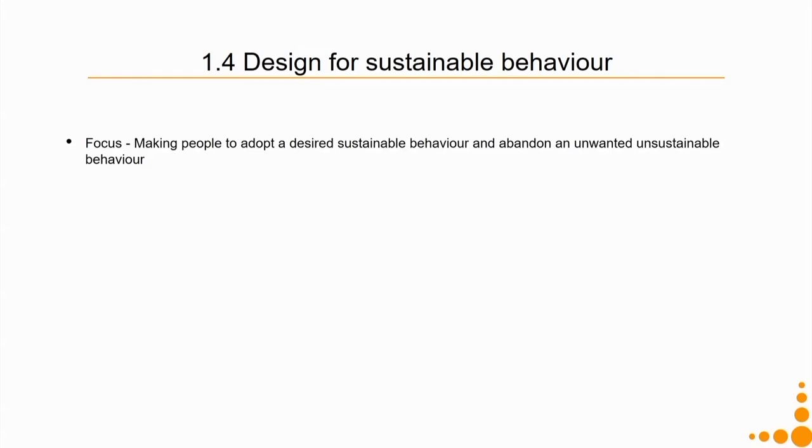Although we have discussed limitations, it does not mean we cannot use these concepts — we should be aware of the limitations and design to overcome them. It may also be possible to combine eco design or design for behaviour change with higher-level approaches. Coming to the fourth approach: design for sustainable behaviour. It focuses on making people adopt a desired sustainable behaviour and abandon unwanted unsustainable behaviour — for instance, switching off lights when not required, or turning off the tap while brushing teeth.